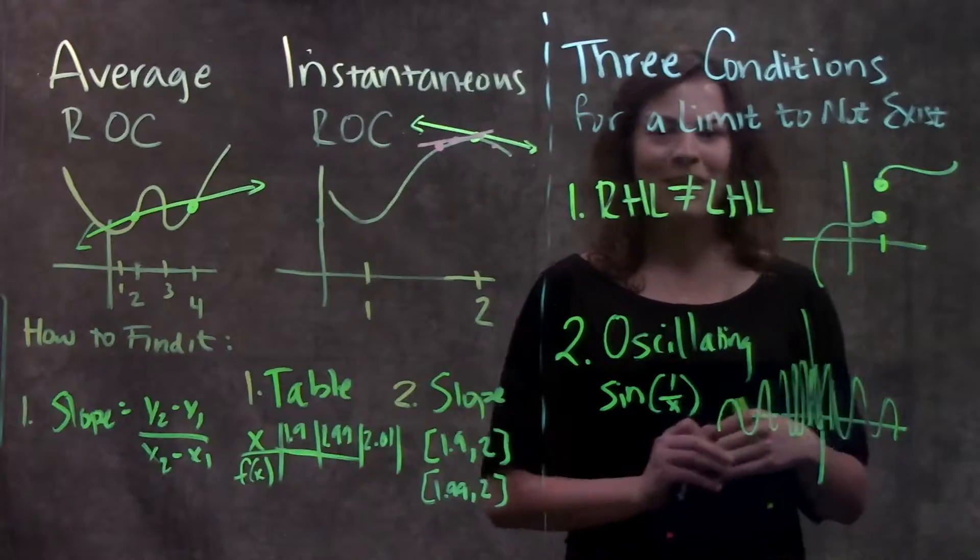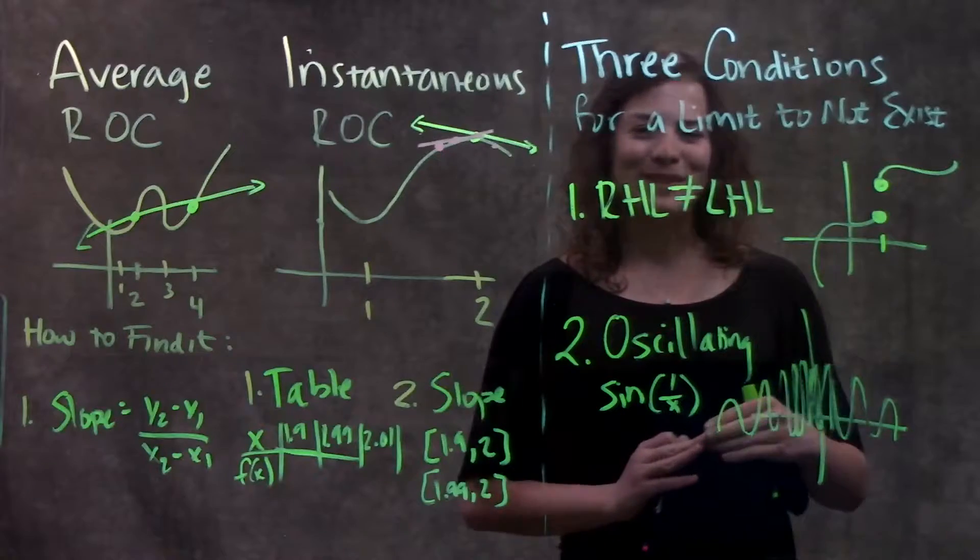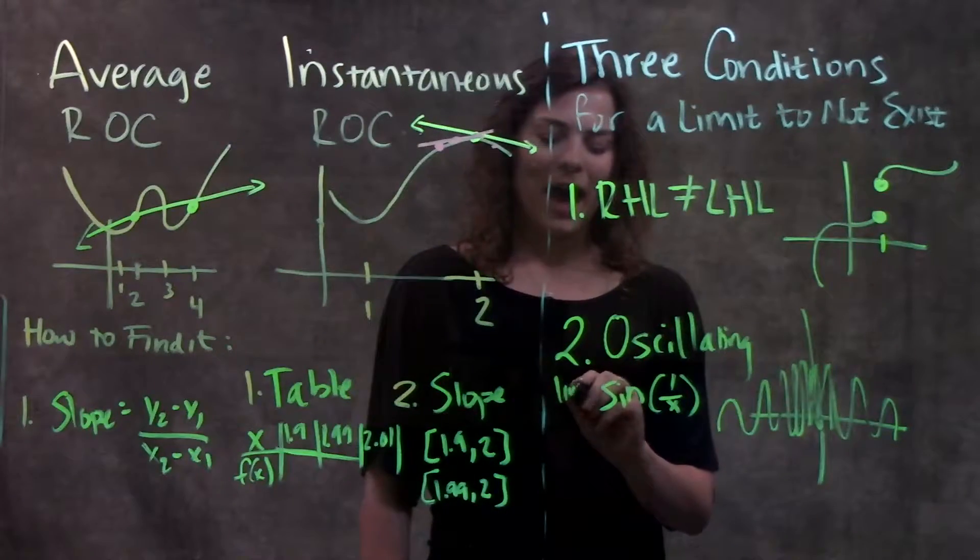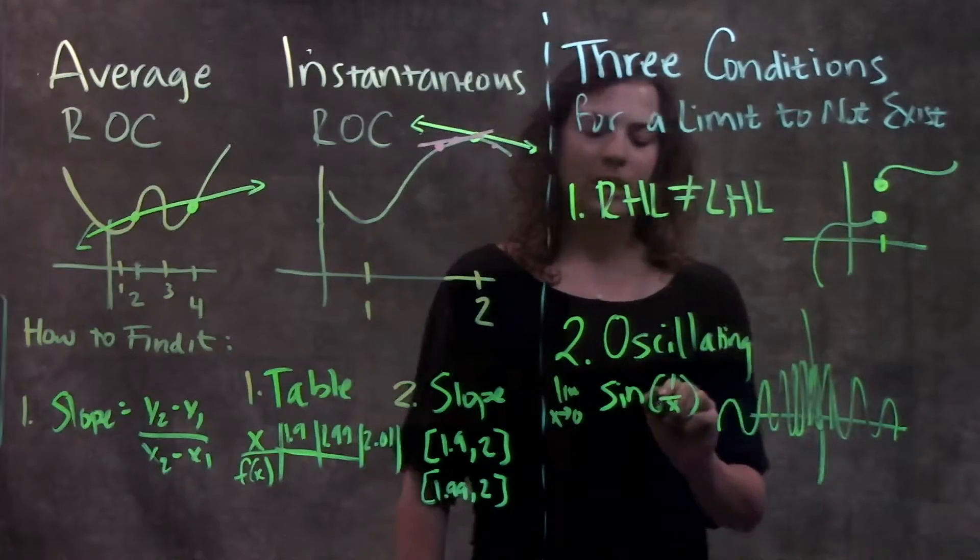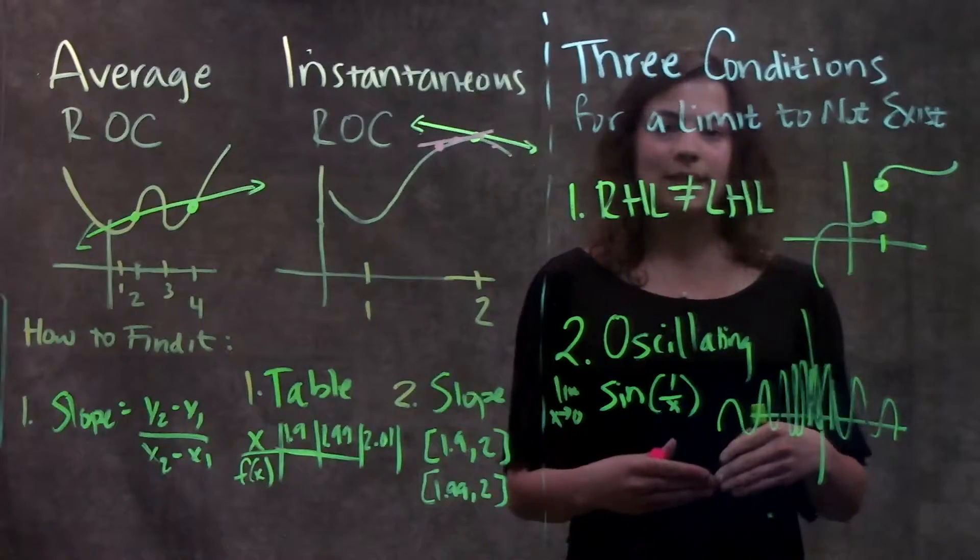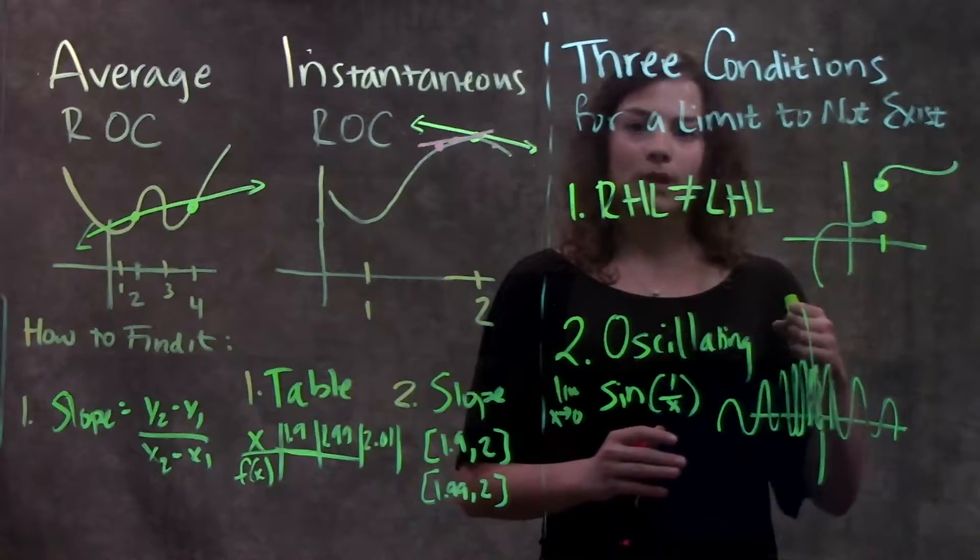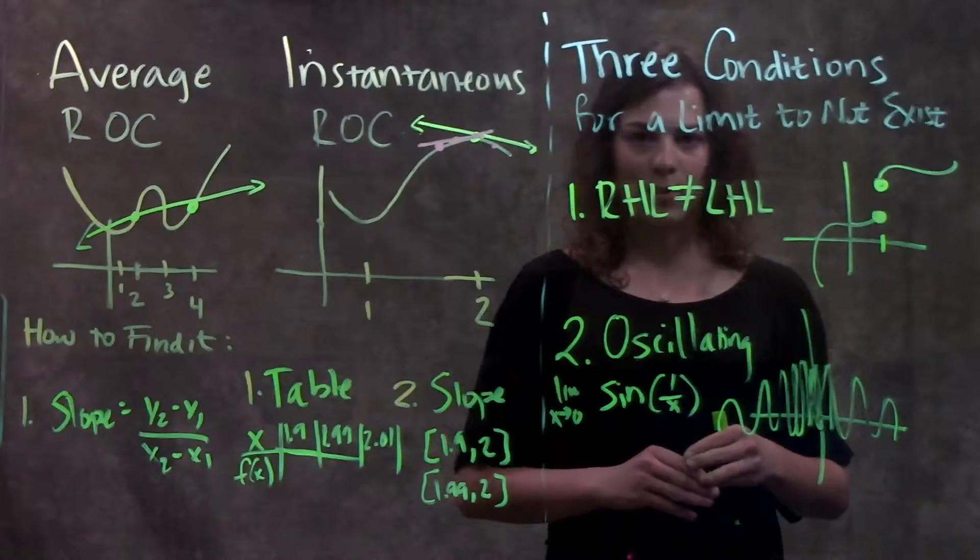This is a really crude drawing, but it goes something along those lines. So the limit as x approaches zero of this function sine one over x doesn't exist because it's oscillating so frequently and so highly at that point.